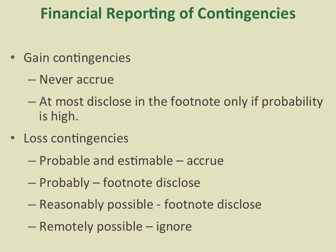For loss contingencies, if it is probable and the amount is estimable, we're going to accrue it. If it is probable or reasonably possible, we're going to disclose them in the footnote. If it is only remotely possible, we're going to ignore them.